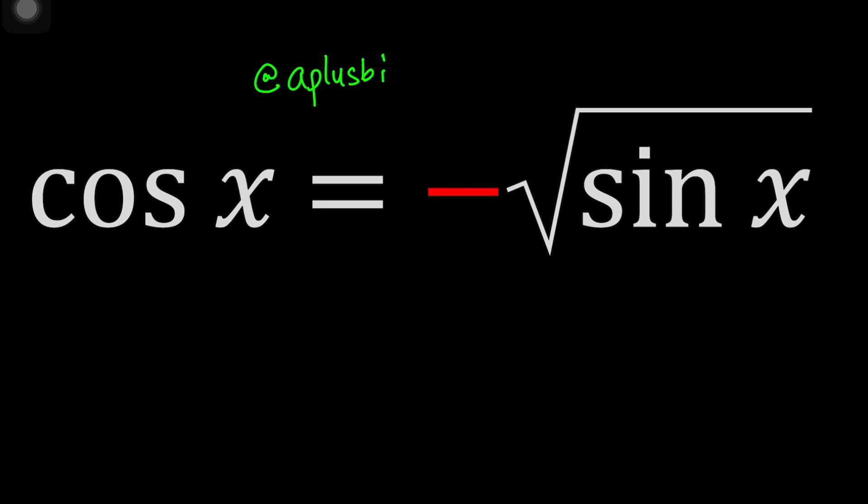For example because we are square rooting sine x, sine x cannot be negative. It means sine x needs to be greater than or equal to 0. But can sine x be 0? And the answer is no. Why? Because if sine x is 0 that implies that cosine x is 0 but sine and cosine cannot be 0 at the same time because we have the famous Pythagorean identity that says sine squared x plus cosine squared x equals 1. So we could safely say that sine x must be greater than 0.